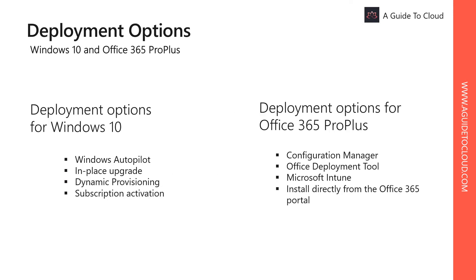How you deploy Windows 10 and Office 365 Pro Plus depends on your business requirements and your environment, including how much administrative control you want over the deployment. Windows 10 includes the following new deployment tools and methods: Windows Autopilot, In-Place Upgrade, Dynamic Provisioning, and Subscription Activation.